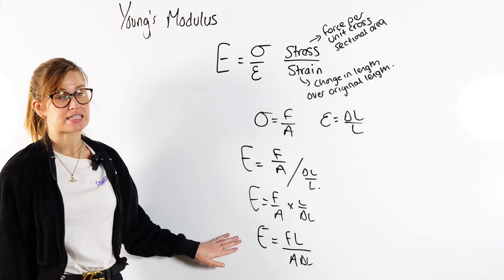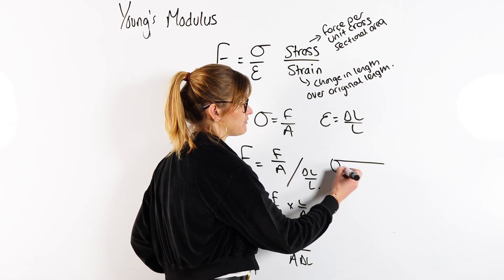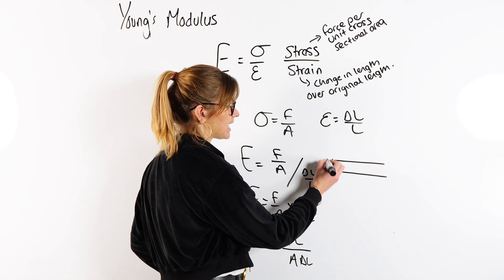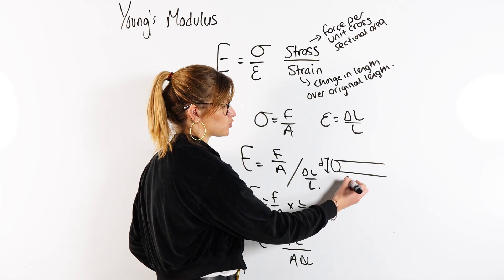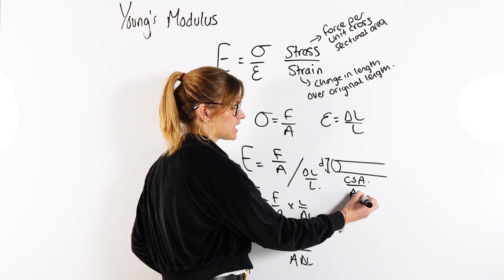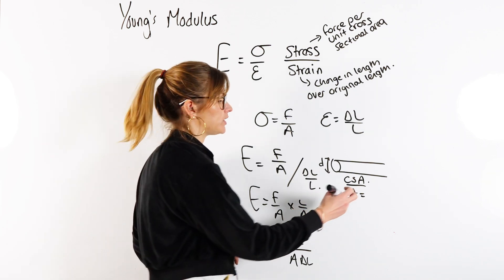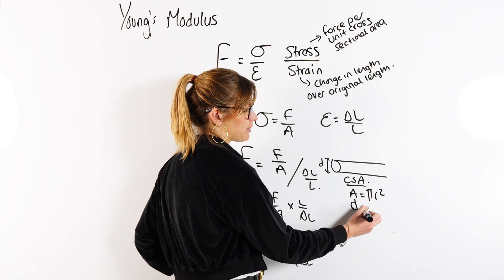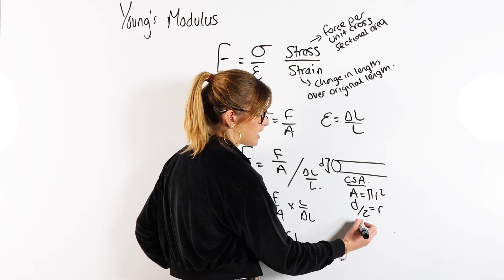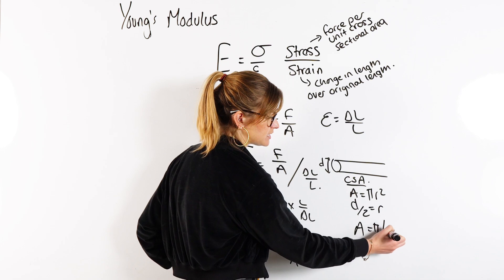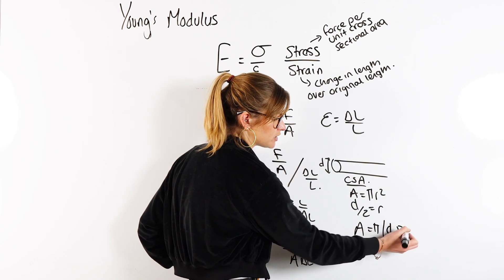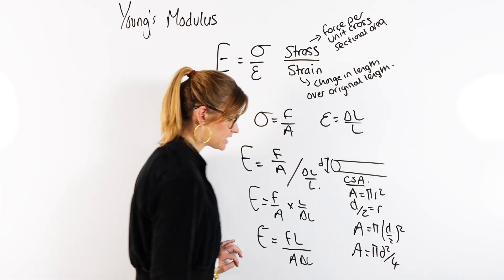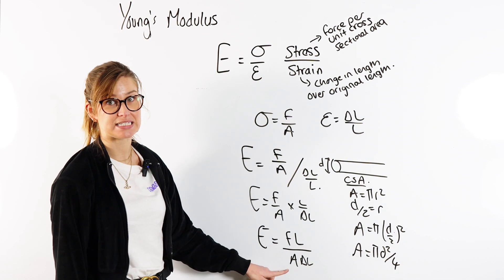Sometimes you might be given the length of a wire and told the diameter of the wire. If you need to find the cross-sectional area, you would normally use pi r squared. Since diameter divided by 2 equals the radius, the area becomes pi times (diameter over 2) squared, which simplifies to pi d squared over 4.